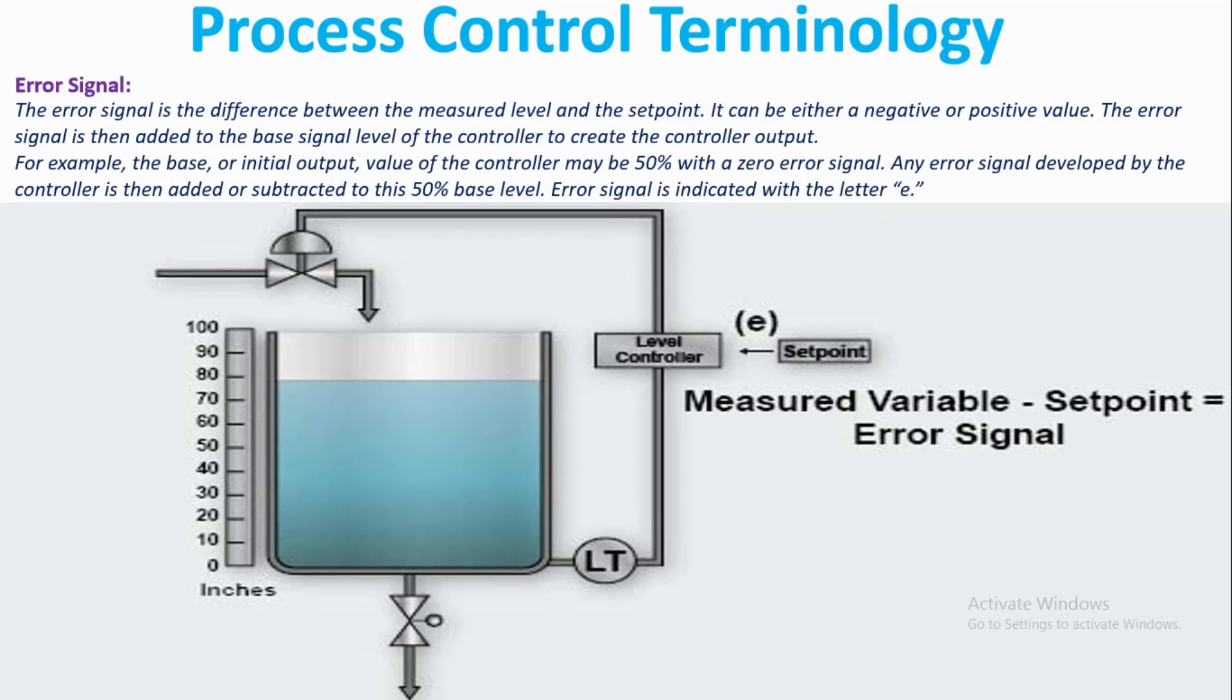For example, the base or initial output value of the controller may be 50% with a zero error signal. Any error signal developed by the controller is then added or subtracted to this 50% base level. Error signal is indicated with the letter E.